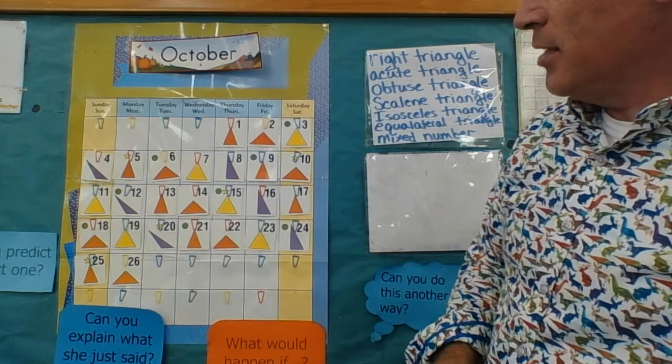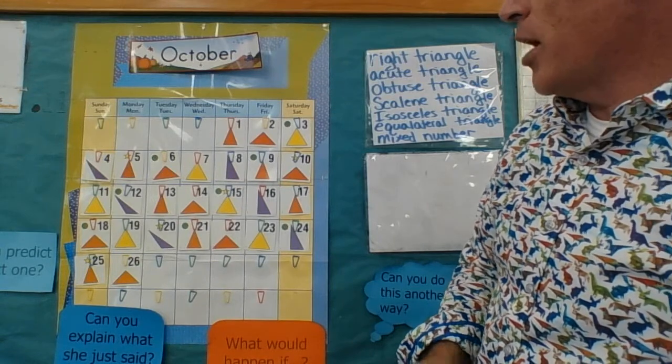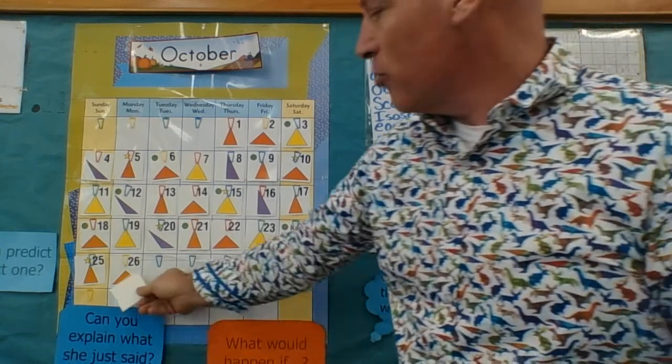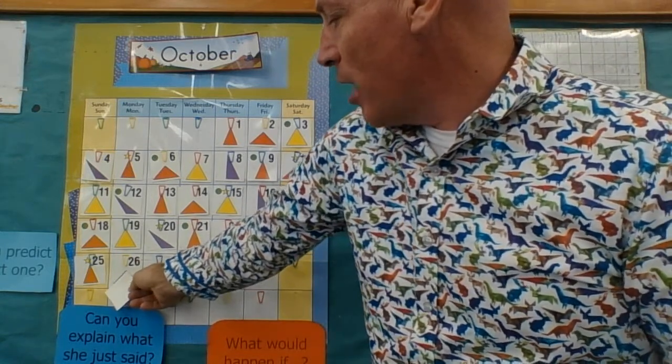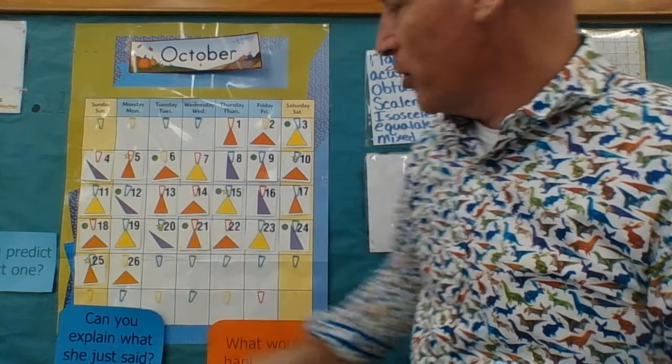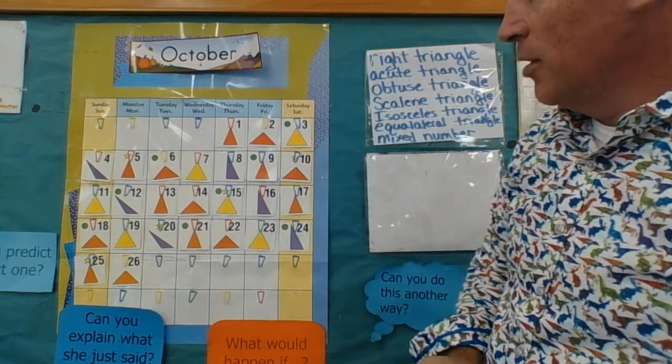It's a right triangle because there's a right angle in there, and you can measure a right angle with any perfect corner with 90 degree angles.